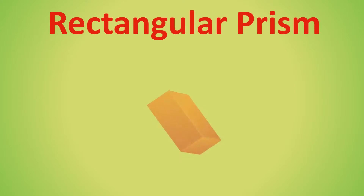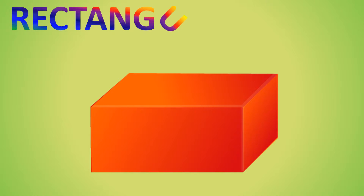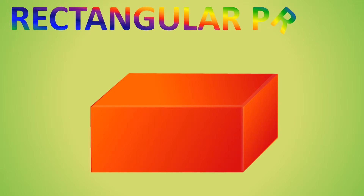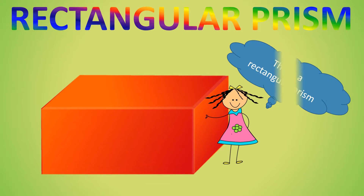Rectangular Prism. R-E-C-T-A-N-G-U-L-A-R, Rectangular. P-R-I-S-M, Prism. Rectangular Prism. This is a rectangular prism. Another name for rectangular prism is cuboid. C-U-B-O-I-D, Cuboid.